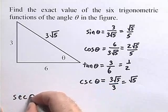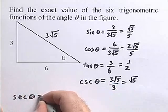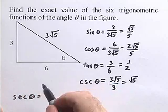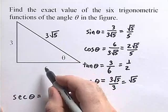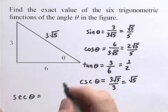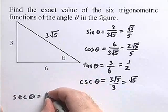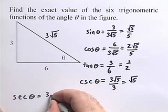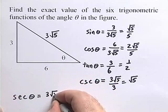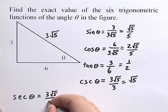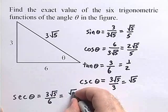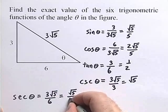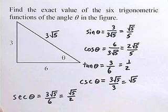The secant of theta is equal to the hypotenuse divided by the adjacent side. We'll have 3 times the square root of 5 divided by 6, which is equal to the square root of 5 divided by 2.